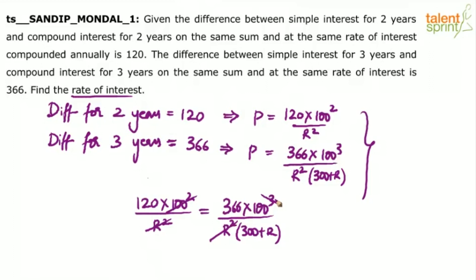This 100 squared and this gets cancelled. So, what do we have? We will have 120 into 300 plus R equals to 366 into 100.